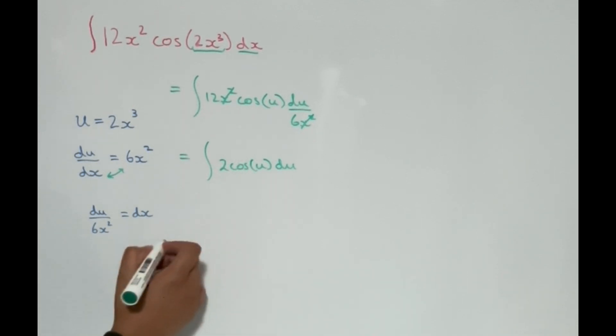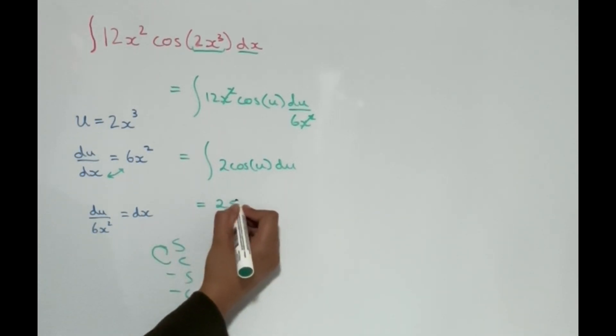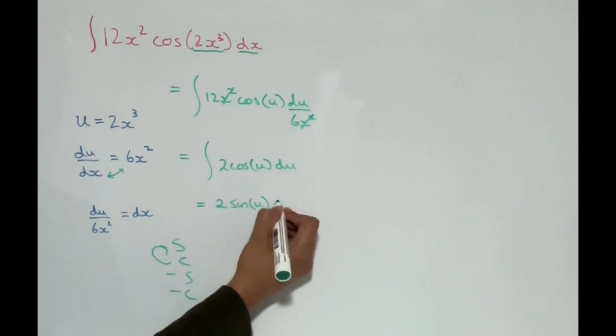So the integral of cos u, well when we're integrating, we go upwards, so cos will integrate to sine. So this will be 2 times sine u plus c.